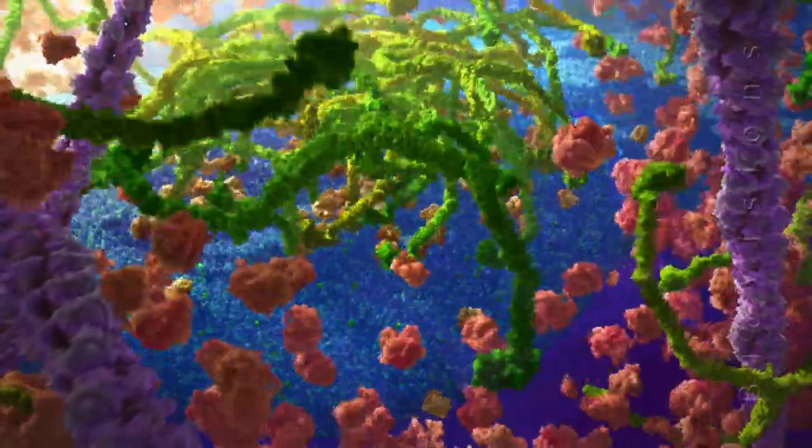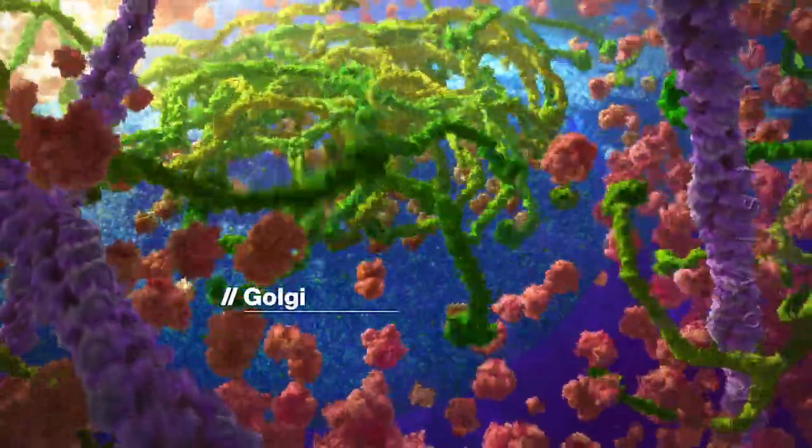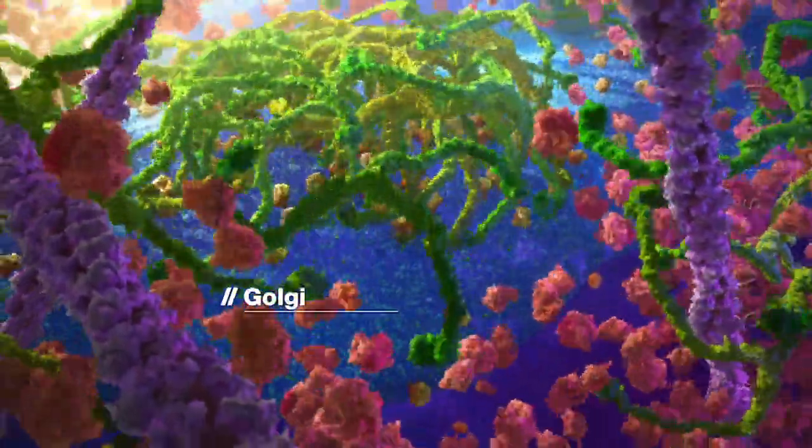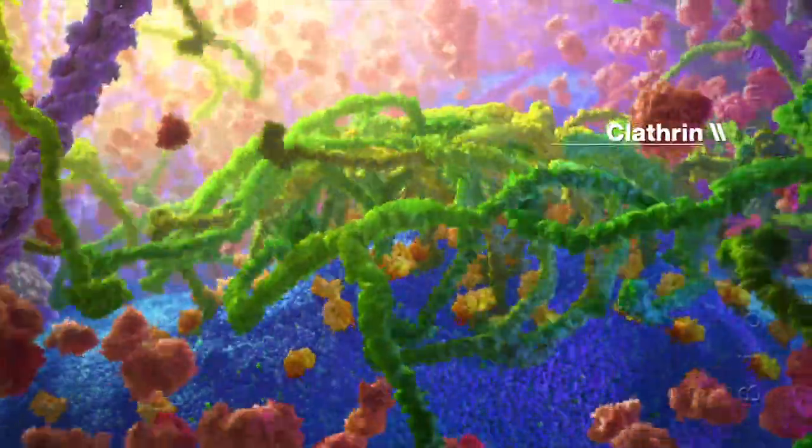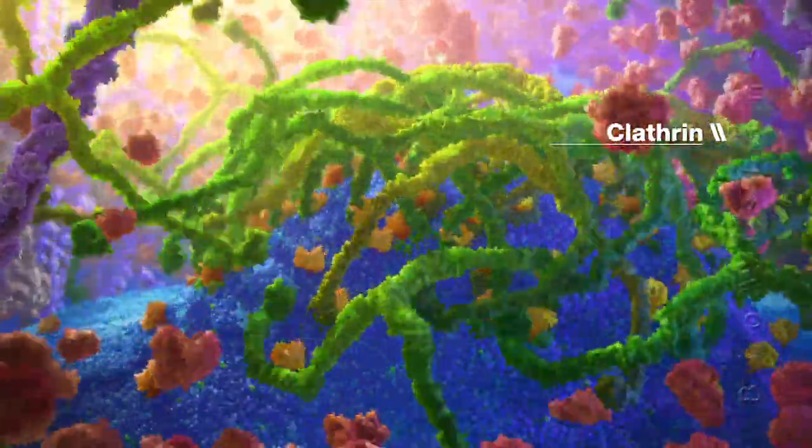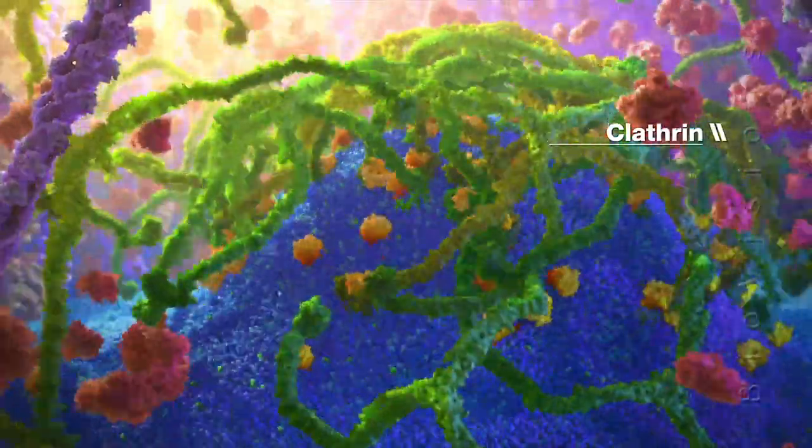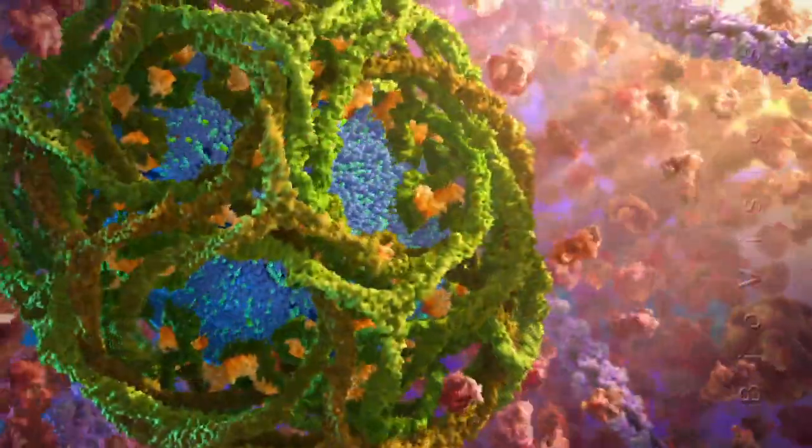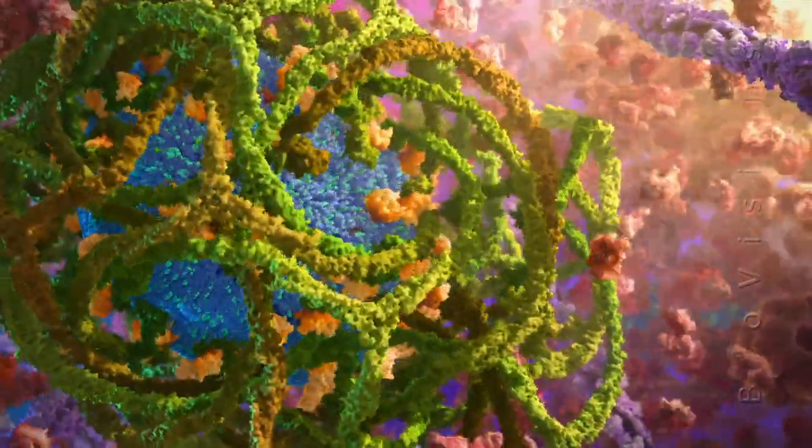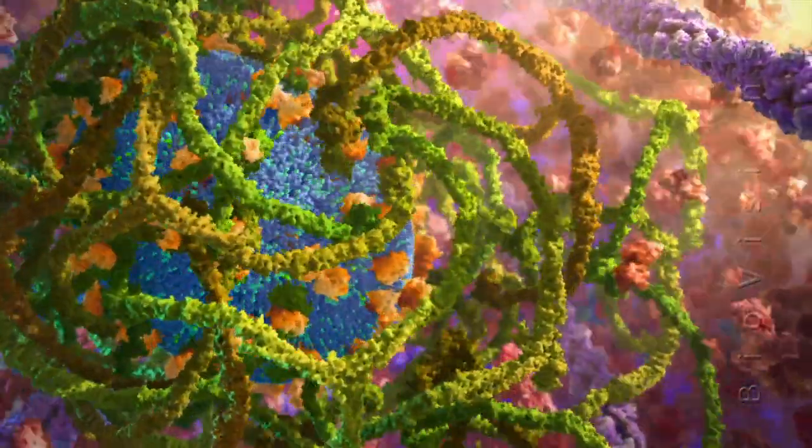For example, vesicles destined to late endosomes are formed at the surface of Golgi stacks with the help of clathrin molecules that assemble into a coat, promoting the curvature of the Golgi membrane. Shortly after their release, the vesicles shed their clathrin coat and adaptor proteins.